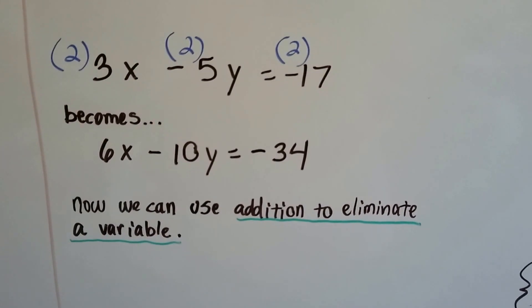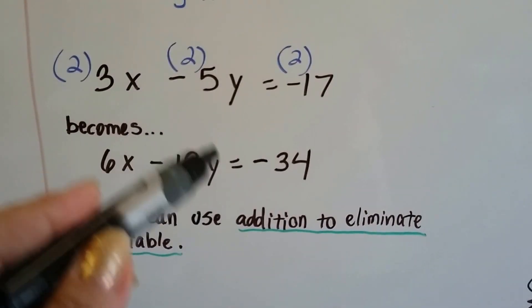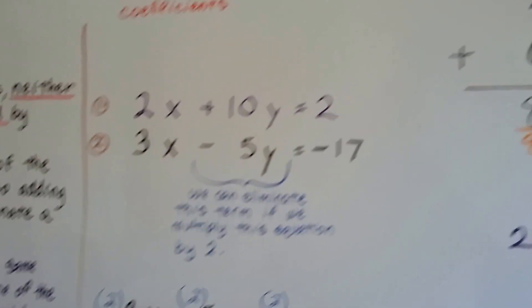Now we can use addition to eliminate this variable, this y, because it's going to be the same as the 10y in the other one.